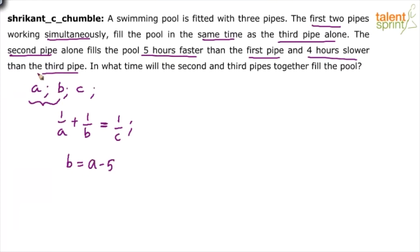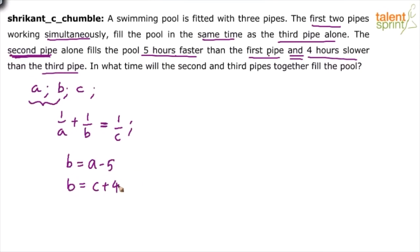The second pipe is also four hours slower than the third pipe. Slower means more time, so B is equal to C plus four. So we have three equations: one by A plus one by B equals one by C, B equals A minus five, and B equals C plus four. Three equations and three unknowns — we can solve this.